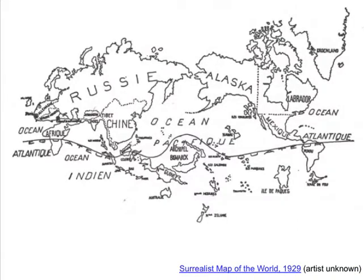One example of drawing attention to the way mapping shapes our perception of the world is this surrealist map of the world from 1929. It really illustrates how maps are editorial choices, in the same way as the words we use to tell stories. In this map, the Pacific Ocean is at the centre rather than Europe, Africa is very small, and Europe and the UK even smaller — giving us a different perception simply through different editorial choices.